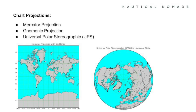Creating a flat chart from the Earth's curved surface is no small feat. This is achieved through projections. The Mercator projection is the most common — it preserves direction, making it ideal for plotting courses with rhumb lines. However, it distorts distances near the poles. The Gnomonic projection is used for plotting great circle routes, the shortest distance between two points on a sphere. It's perfect for long voyages, but distorts shapes and distances away from its central point.